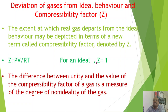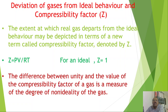For an ideal gas, the value of the compressibility factor Z is 1. The difference between unity and the value of Z for a gas is a measure of the degree of non-ideality of the gas. Real gases show positive or negative deviations from ideality, which are studied using Z.